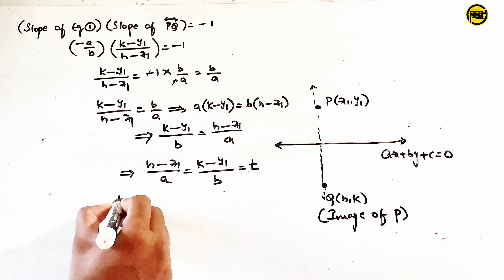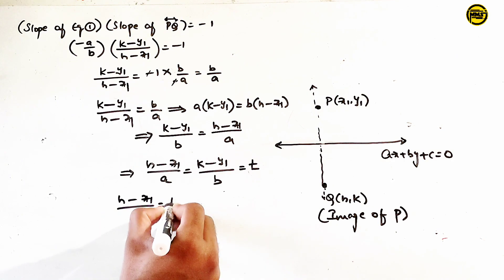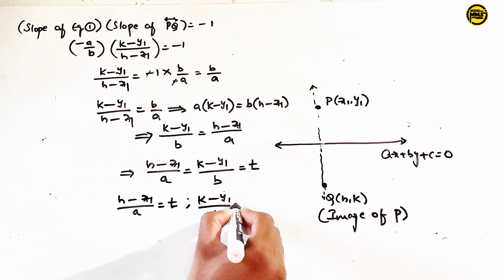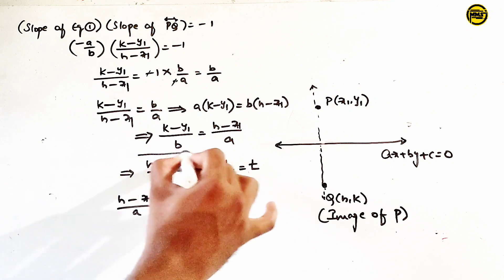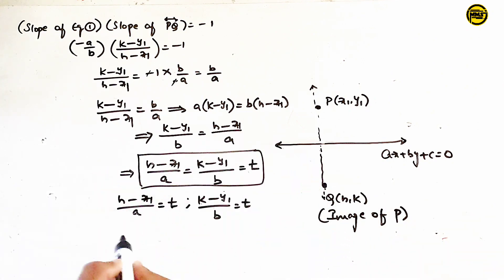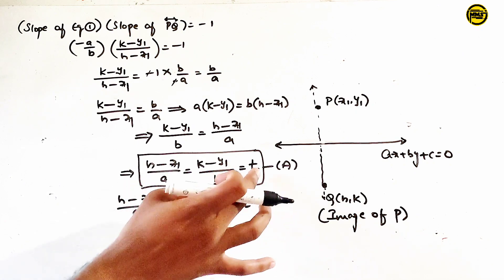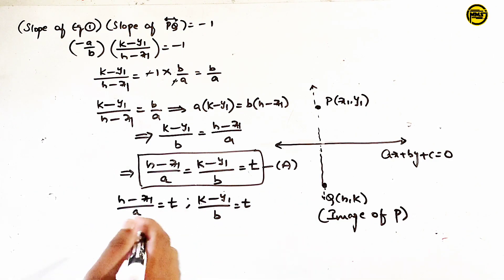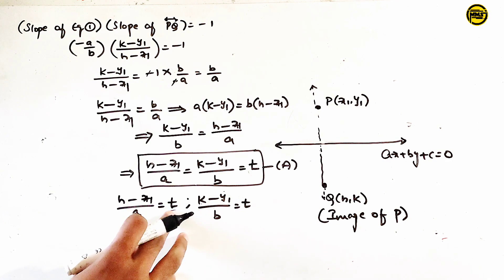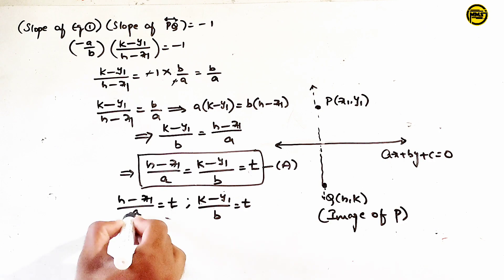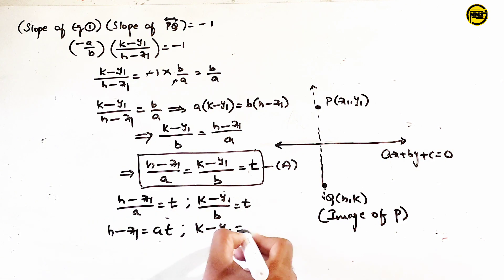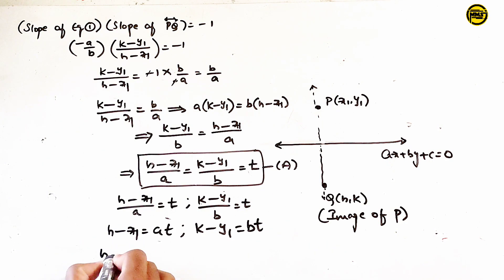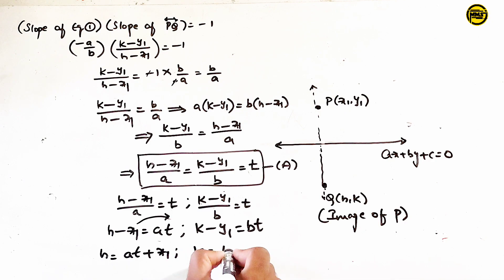Let h minus x1 by a equal to t and k minus y1 by b equal to t. Then h minus x1 equals a times t, so h equals x1 plus at. And k minus y1 equals b times t, so k equals y1 plus bt.